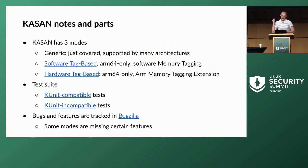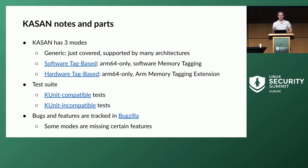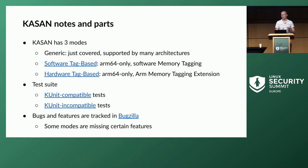A few other notes: KASAN has three modes. The generic mode I just described works on any architecture — there are maybe five to eight architectures that support KASAN now. The other two modes involve memory tagging and are specific to ARM64, requiring certain ARM64 features.